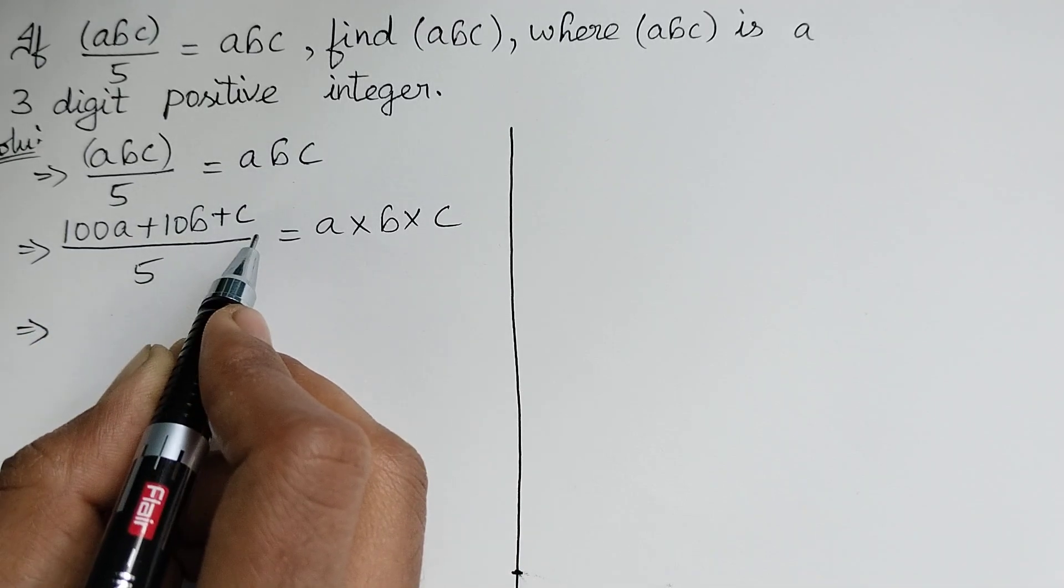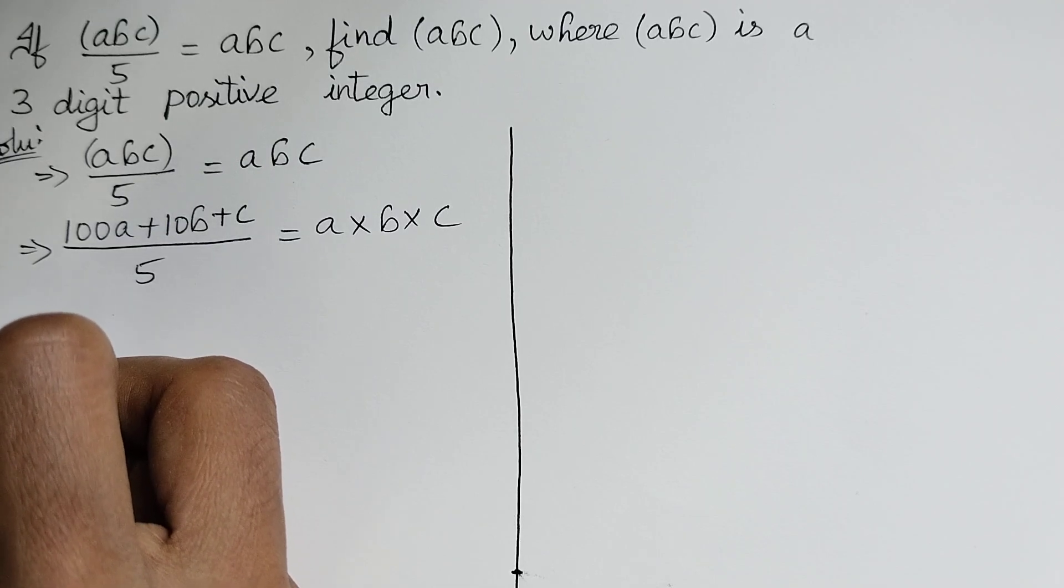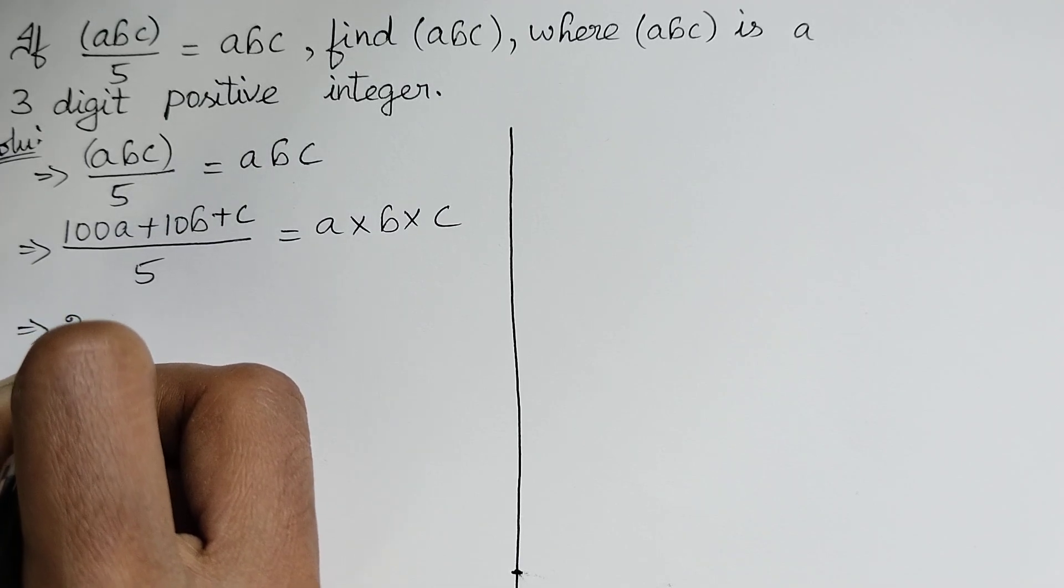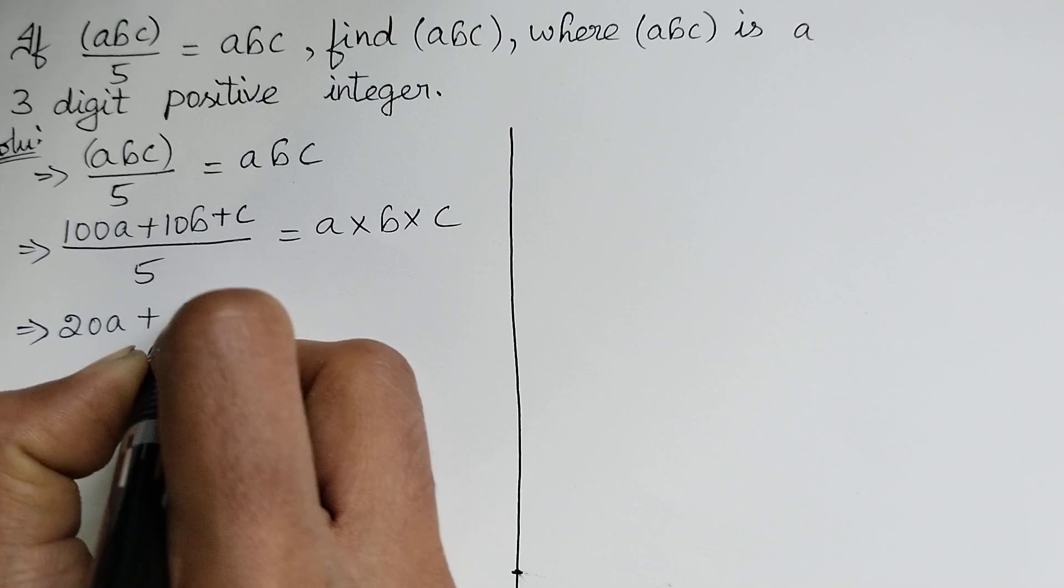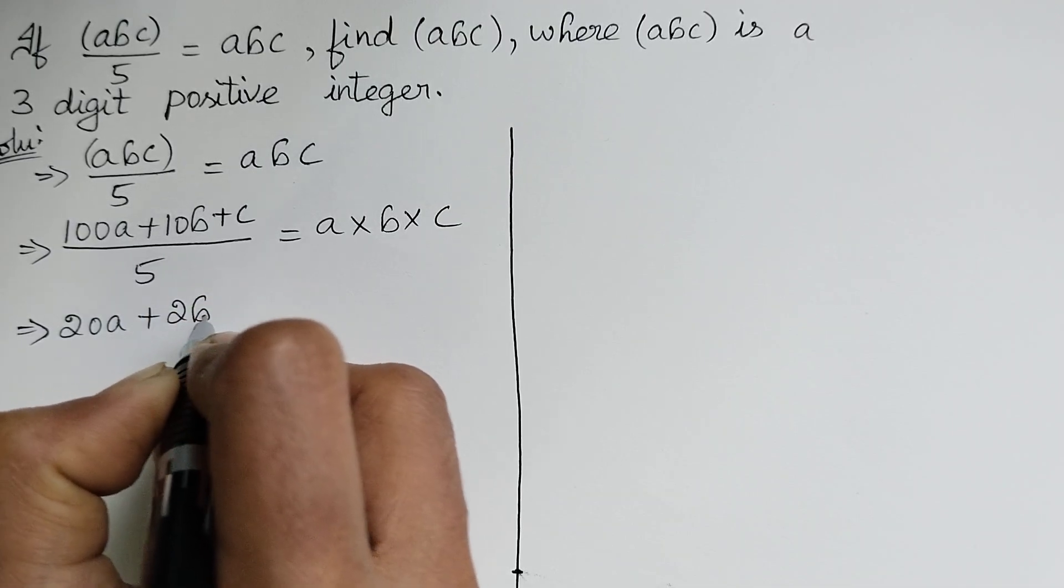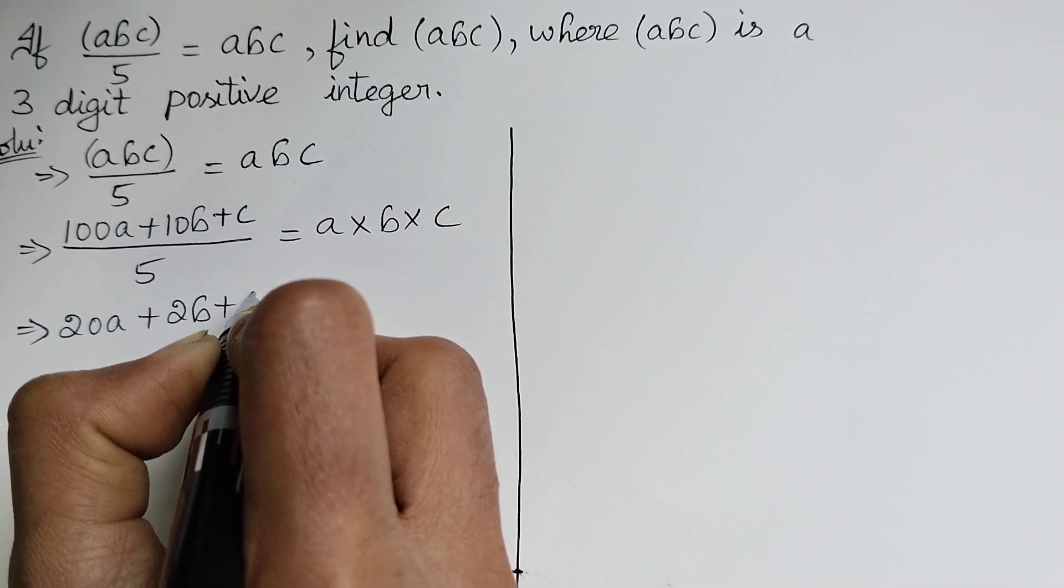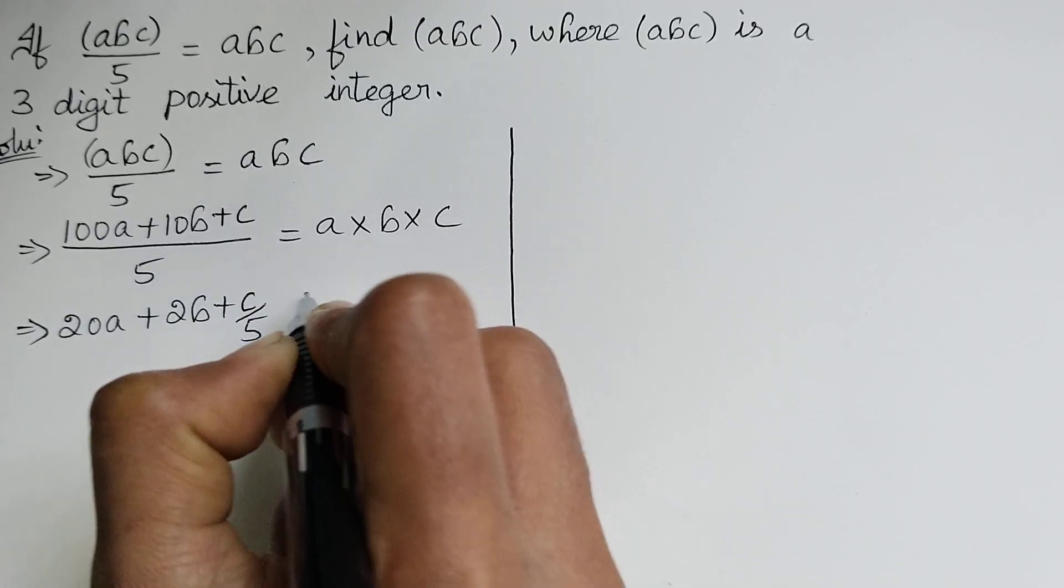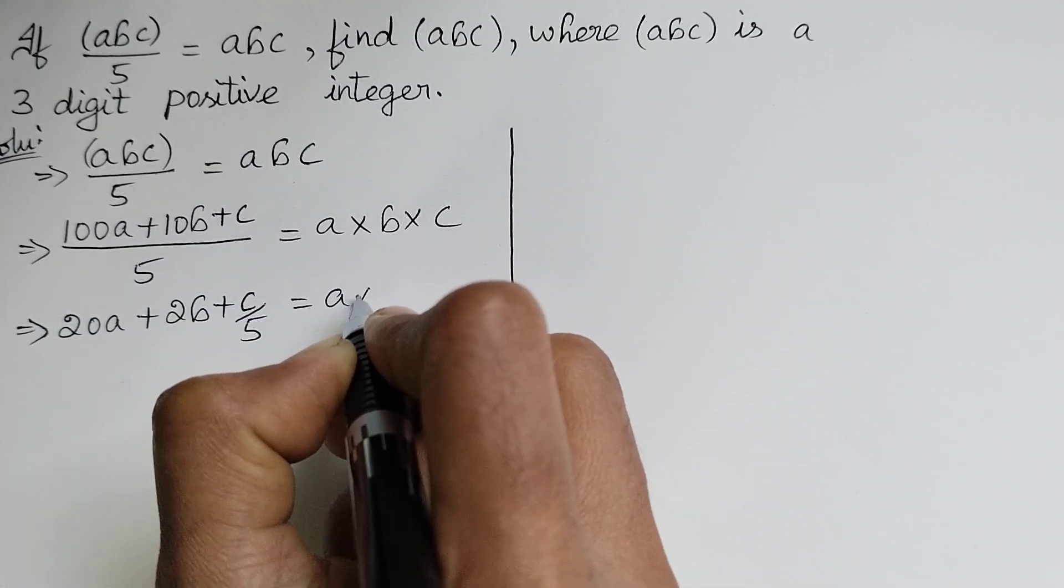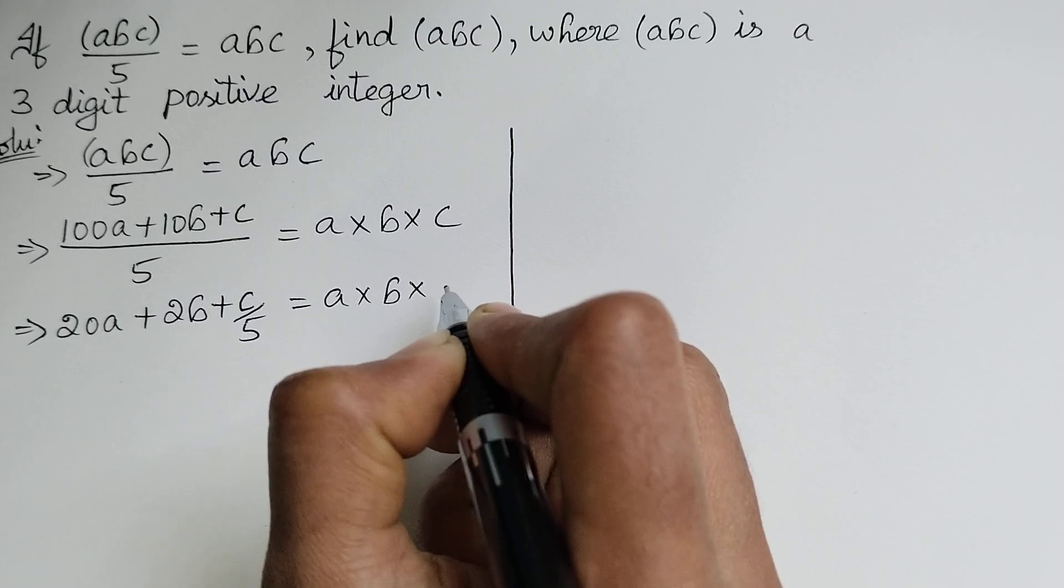Now simplifying this we get (20a + 2b + c)/5 = a × b × c.